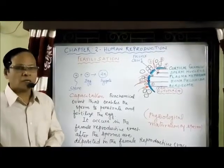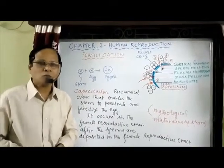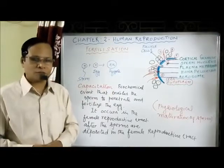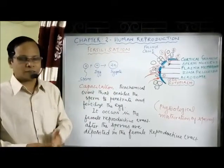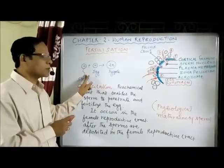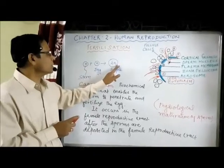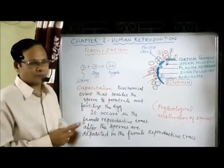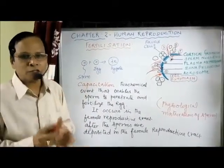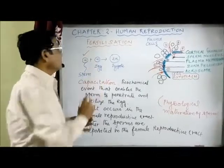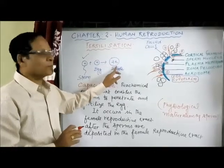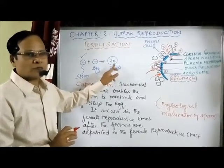Today we discuss the fertilization process. Fertilization is the fusion of a haploid sperm with a haploid egg to form a diploid zygote or fertilized egg. Fertilization occurs when the haploid sperm fuses with the haploid egg to form a diploid zygote.